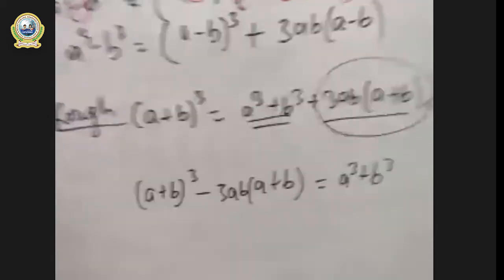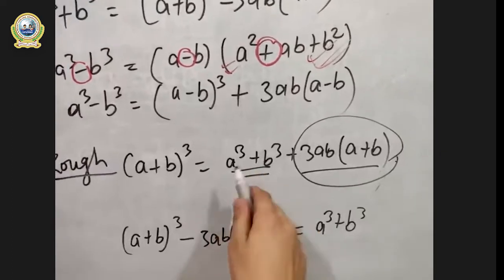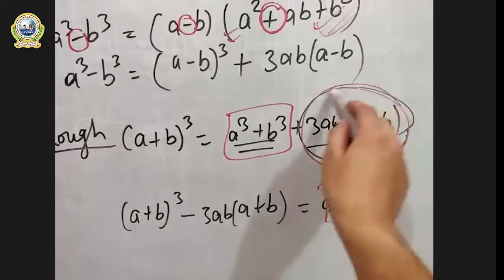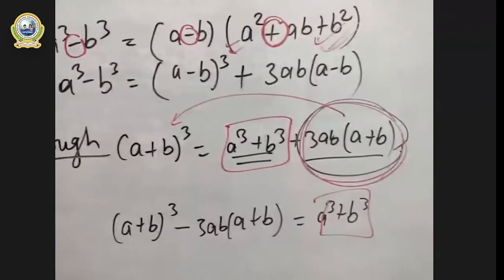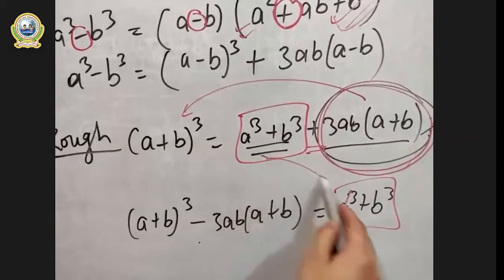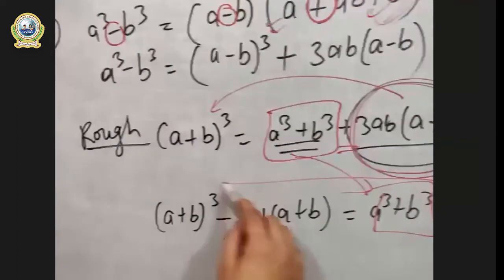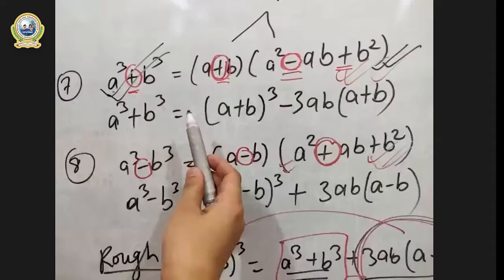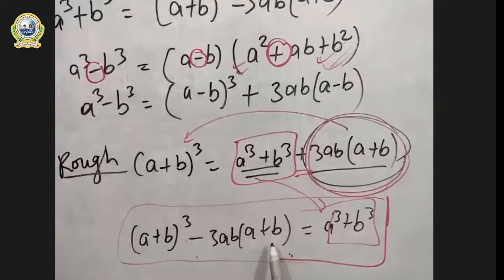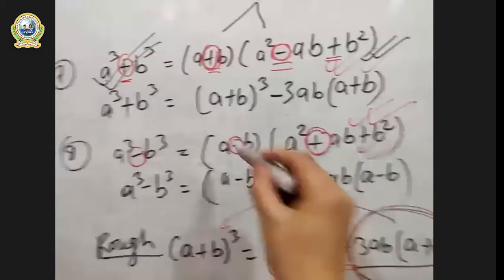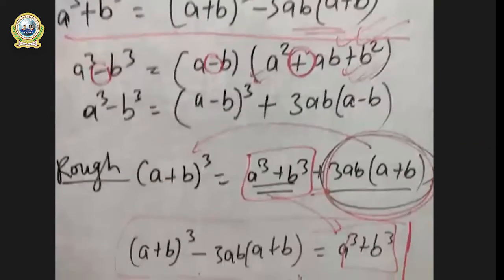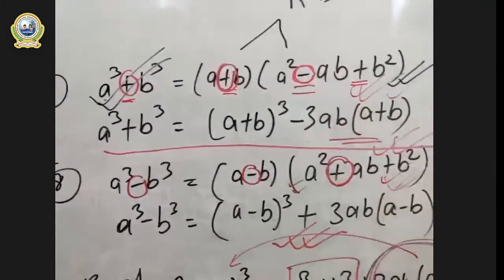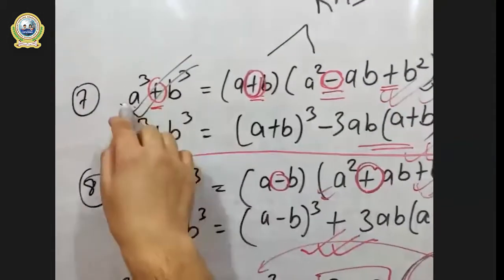I have kept the right-hand side unchanged and shifted the 3ab(a+b) expression to the left, which makes its sign become minus. The same has been written for our formula. These two forms are the same — I have just rearranged that formula. You need to write this in your notes, and for now memorize the first form: a³ + b³ = (a+b)(a²-ab+b²). You don't need the flat ones immediately.